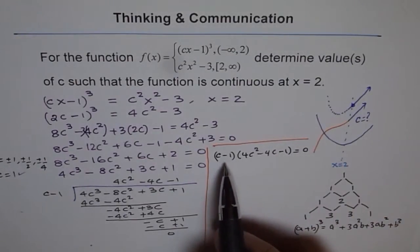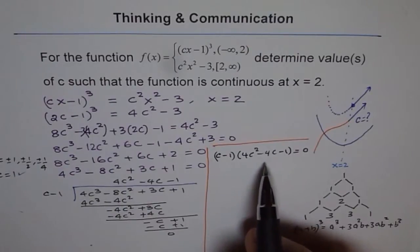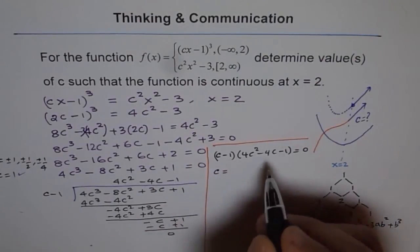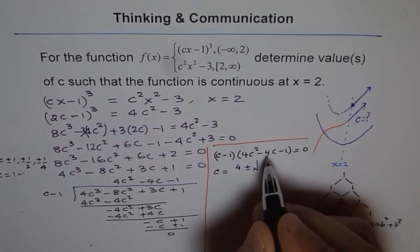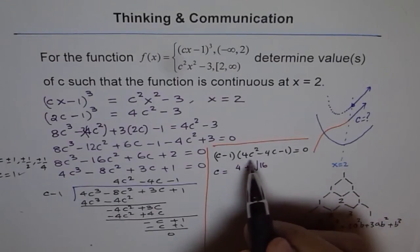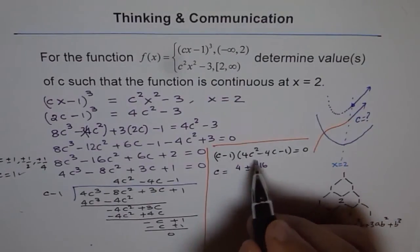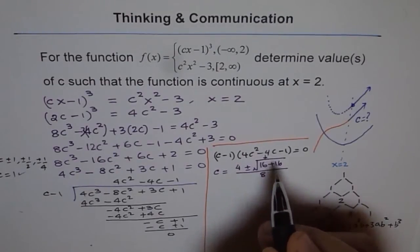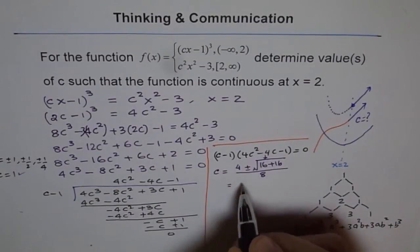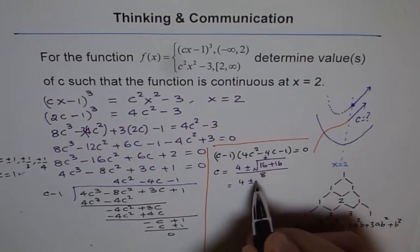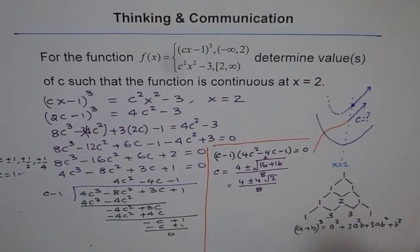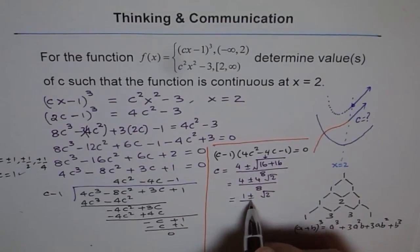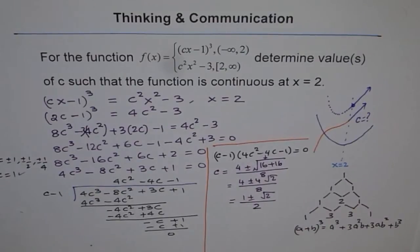So the equation factors as c minus 1 times 4c squared minus 4c minus 1 equals 0. We know one factor gives c equals 1. For the quadratic 4c squared minus 4c minus 1, we use the quadratic formula: c equals minus b which is 4, plus or minus square root of b squared which is 16, minus 4ac which is 4 times 4 times minus 1 giving plus 16, all divided by 2a which is 8.